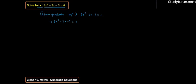Middle term ko split kuch is tariqe sae karathe hain ki joh splitted term ka product hain aur joh remaining term ka product hain woh same hone chahiye. So, 8x² ko as it is rehne denge, minus 2x ko likhte hain minus 6x plus 4x, minus 3 equals to 0.